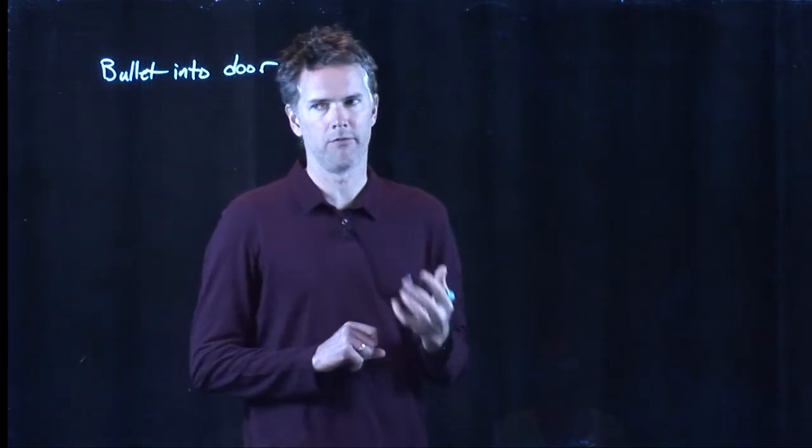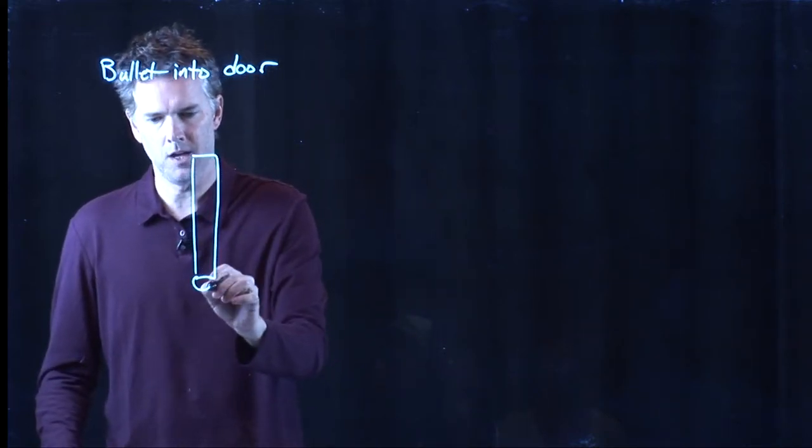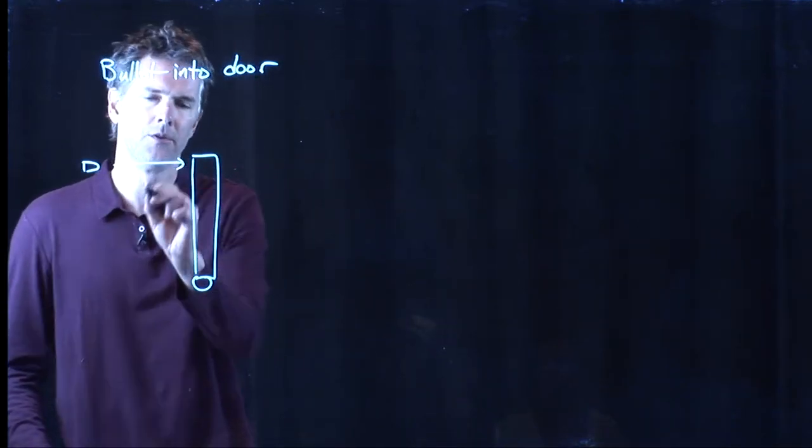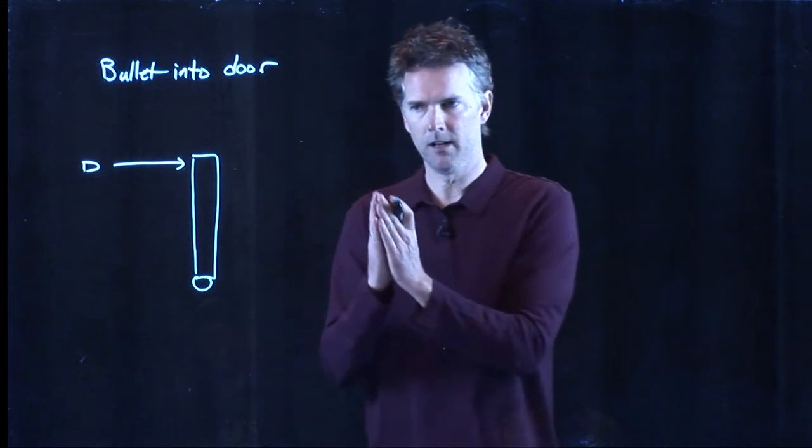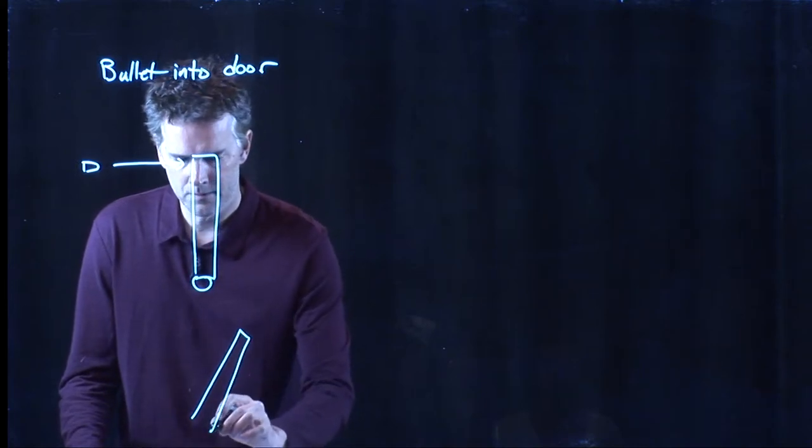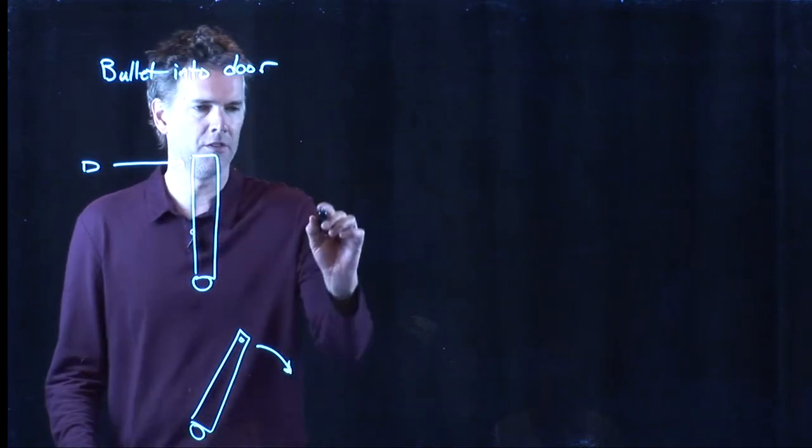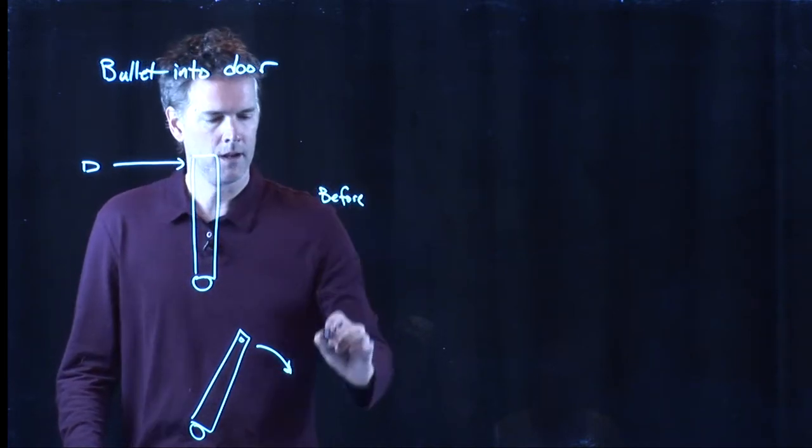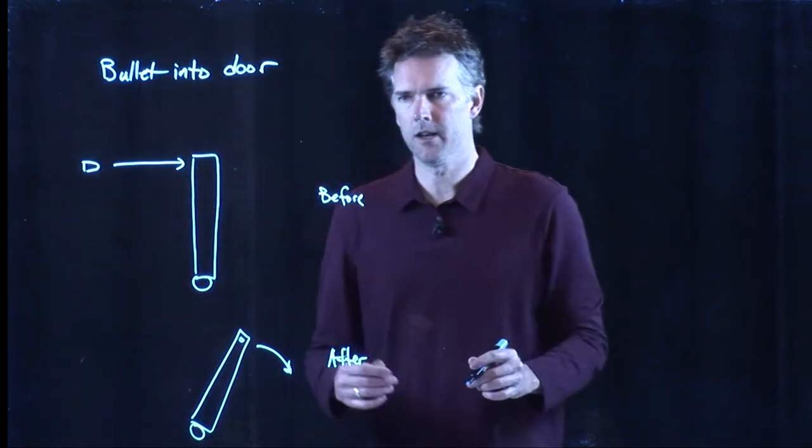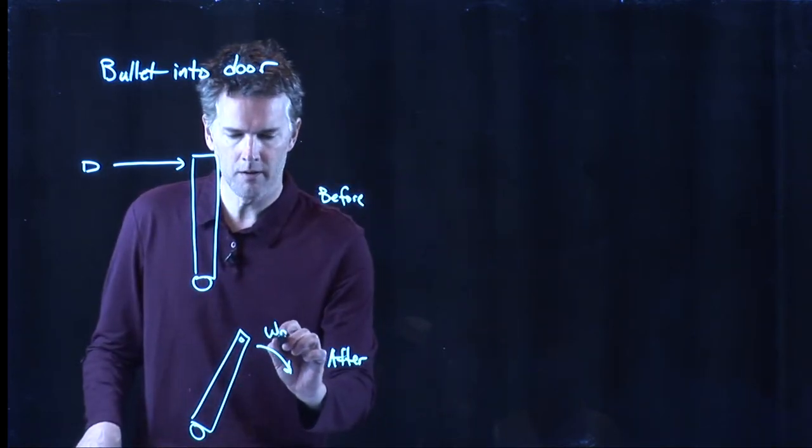So in this problem we have the following scenario. We have a door, here's the hinge on the door, and we're going to fire a bullet into the door. It's going to stick in the door and the door will swing open and the bullet is lodged in the door. So this is the before picture, and this is the after picture, and what we want to figure out is how fast does that door swing open. What is this omega final?